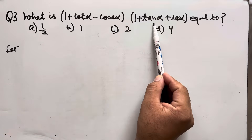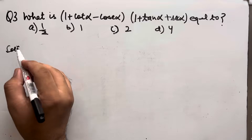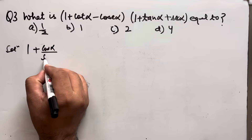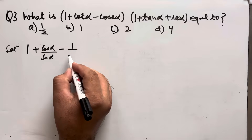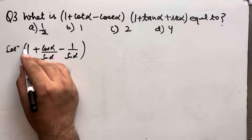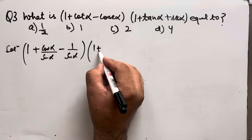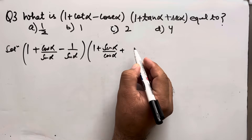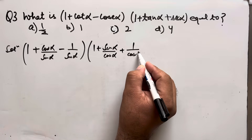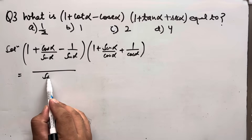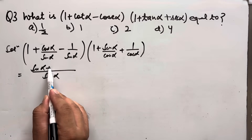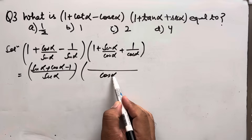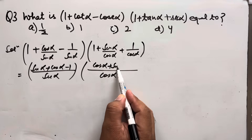Question number 3: find (1 + cotα − cosecα)(1 + tanα + secα). Here cosecα = 1/sinα, tanα = sinα/cosα, and we take LCM as sinα·cosα to combine terms, giving (cosα + sinα − 1)/sinα · (cosα + sinα + 1)/cosα.